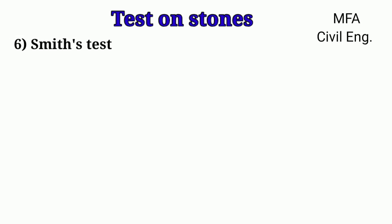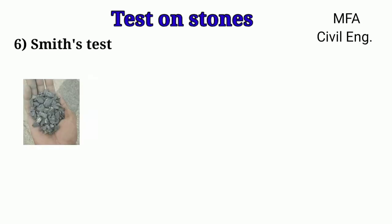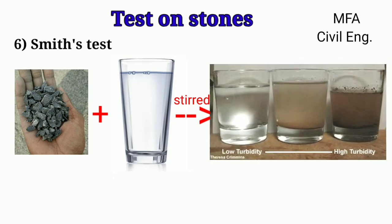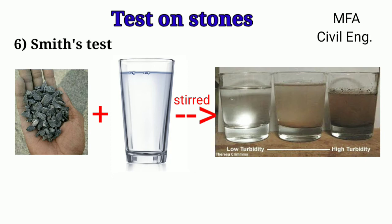Smith test: This test is useful for finding out the presence of soluble matter in a stone sample. A few pieces of stone are placed in a glass of clean water for about an hour. The tube is stirred or shaken. Due to the presence of earthy matter, the clean water becomes dirty. Slight cloudiness of the water indicates that the stone is good and durable. If the water is too dirty, it indicates that the stone contains too much soluble earthy and mineral matter.